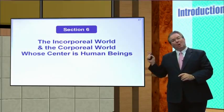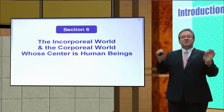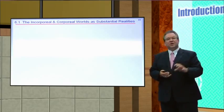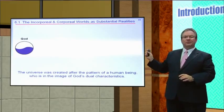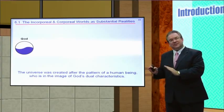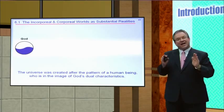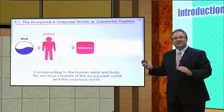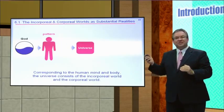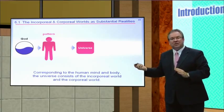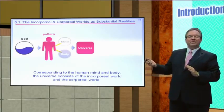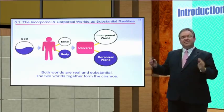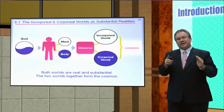The universe was created after the pattern of a human being who is in the image of God's dual characteristics. In the same way as a human has a mind and a body, the universe consists of the incorporeal or internal spiritual world and the corporeal or physical world. Both worlds are real and substantial, and the two worlds together form the cosmos.